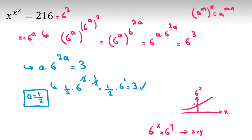And when a equals 1 over 2—remember, x was 6 to the a—so x, which we wanted to find, is 6 to the a, which is 6 to the half. Or you can say square root of 6. That's our answer.